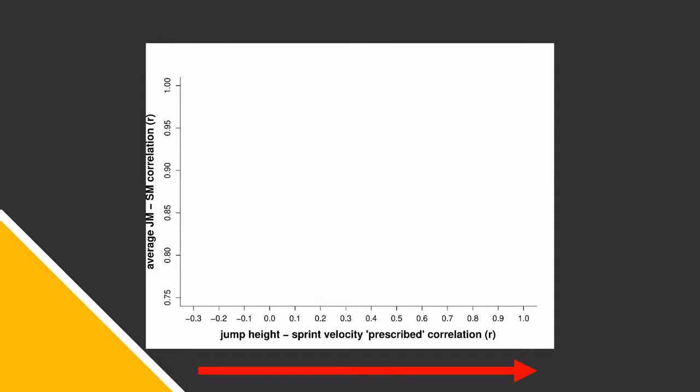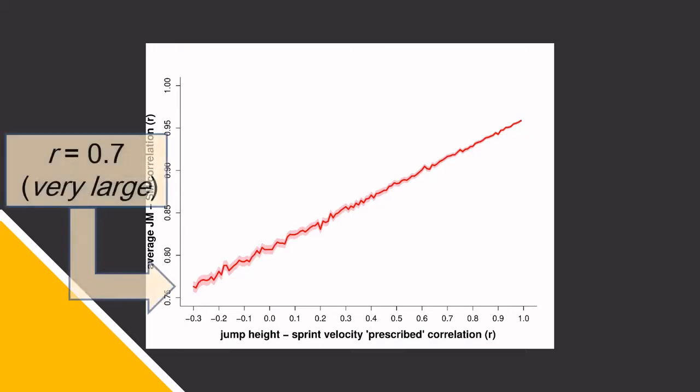Firstly, the higher the correlation between jump height and sprint speed, the higher the correlation between the two momenta. This correlation remained very large, even when jump height and sprint speed had no relationship with each other, or even when they related negatively with each other.